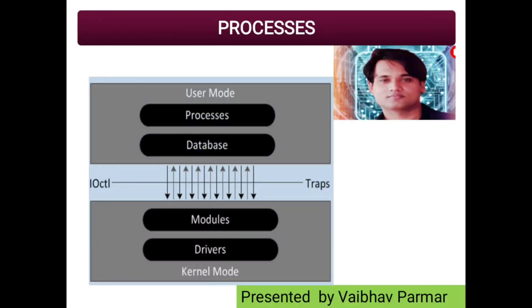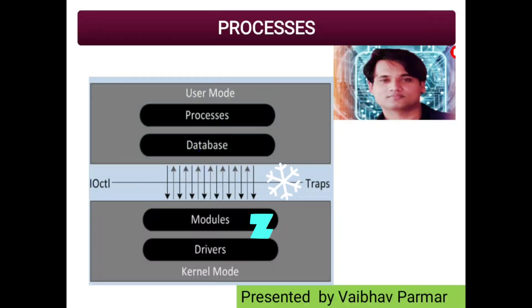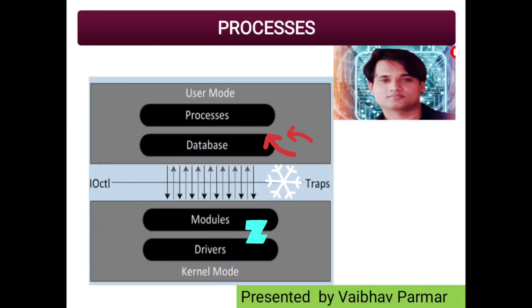There are two mechanisms by which kernel mode and user mode processes communicate with each other. One is Input Output Controls — in short, we call it IO CTL — and the other one is Traps. When a kernel mode process wishes to signal to a user mode process, it sets a trap, which actually changes the value in a registry key.